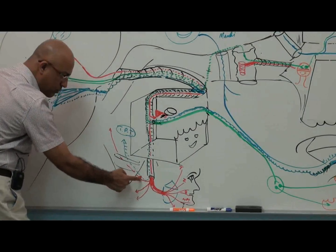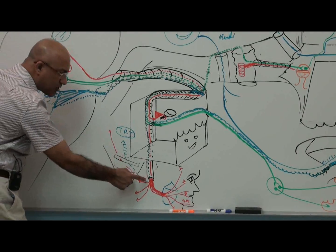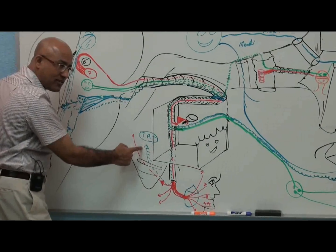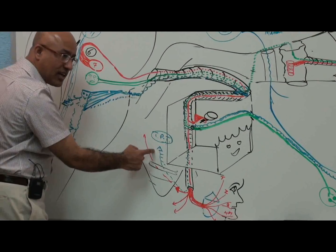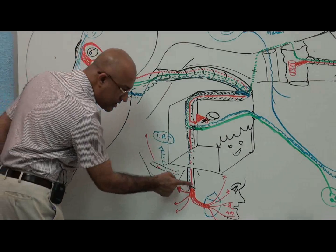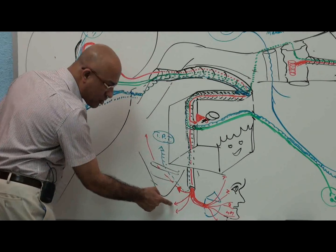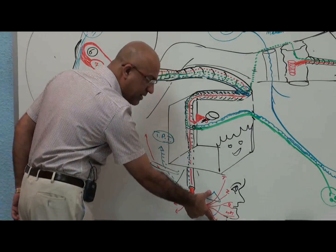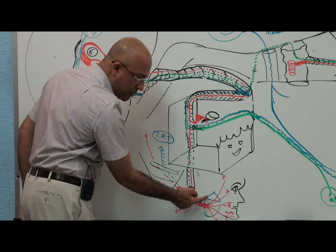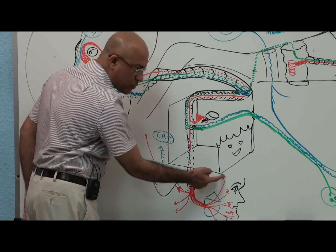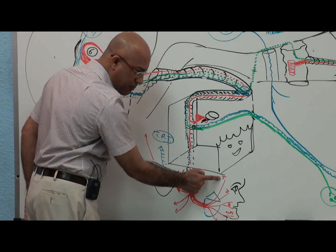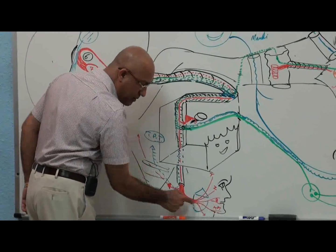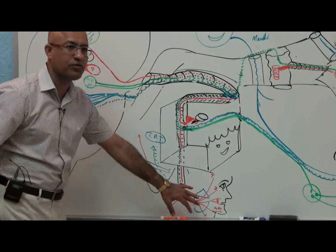These fibers come out at the stylomastoid foramen and give the posterior auricular branch — which goes to muscles, and some sensory fibers also supply the external ear with touch, pain, and temperature sensation. Then these fibers give small branches to the posterior belly of digastric and stylohyoid, and the main facial nerve proper enters the parotid gland.